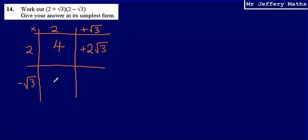Negative root 3 multiplied by 2 will give me negative 2√3, and then negative root 3 multiplied by positive root 3.